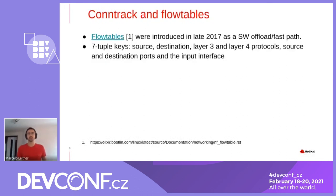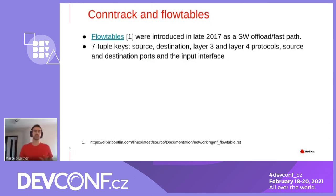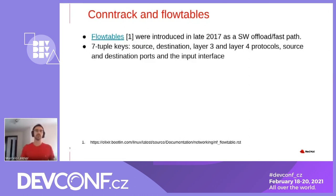Then we also have this thing called flow tables. Flow tables were introduced in late 2017 as a software offload or fast path. It bypasses the traditional forwarding path of the stack because it already computed the steps that are needed when it saw the first packets, and it was decided to offload this connection. It consists of seven-tuple keys — the same six, but now plus the input interface.